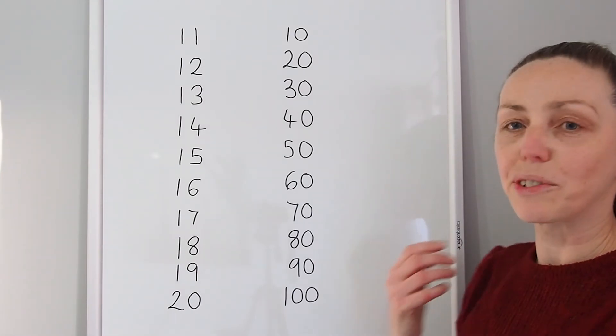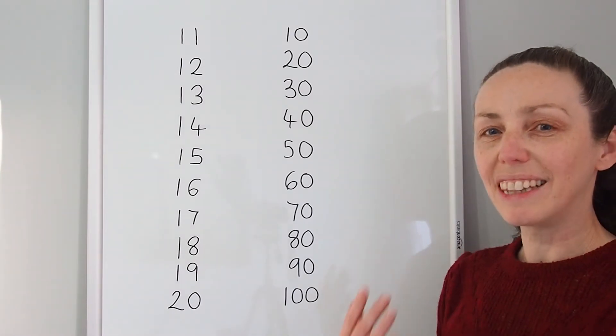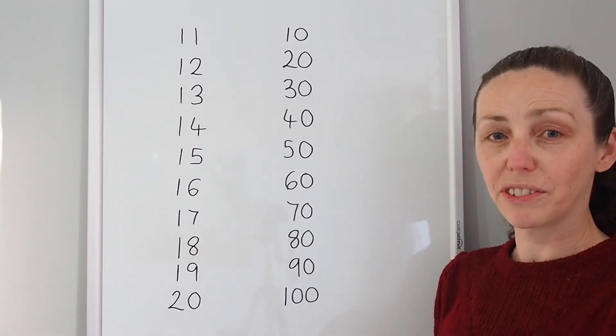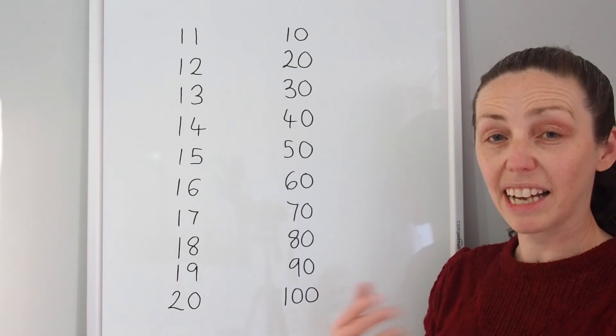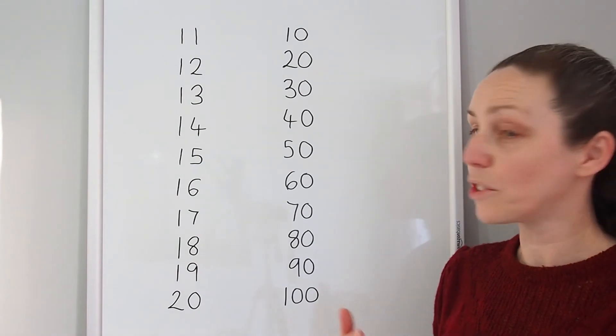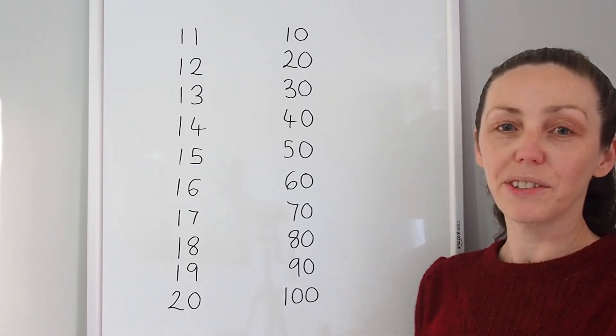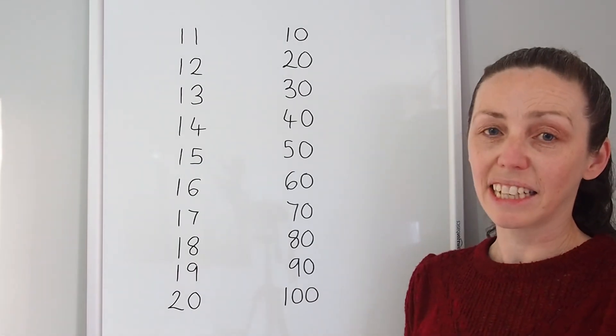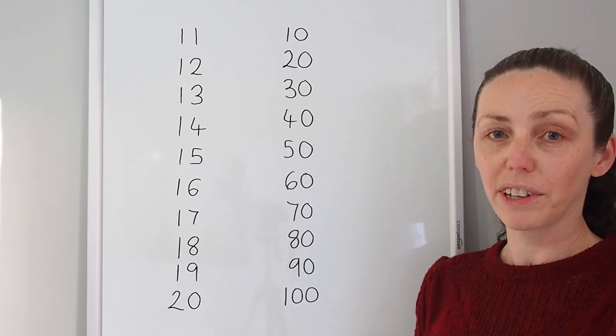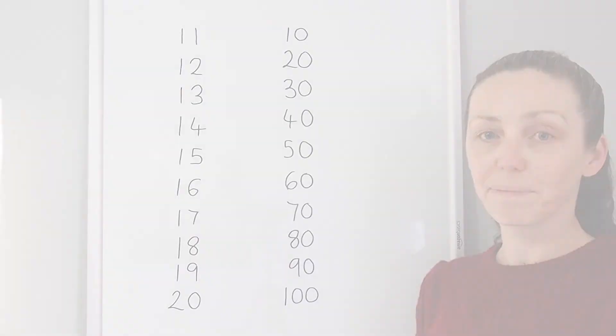So it's really important to listen to what children are saying and actually get them to repeat clearly those teen and ty endings every time they say one of those numbers.